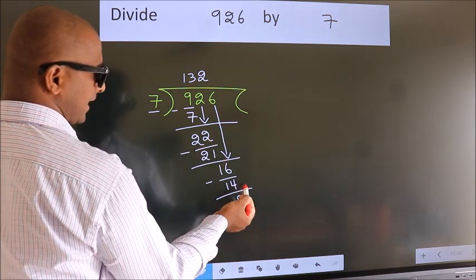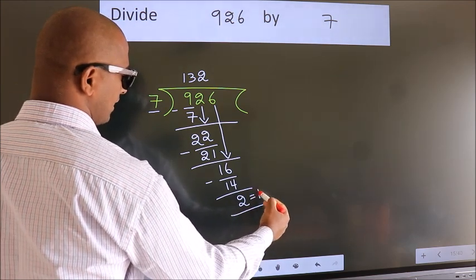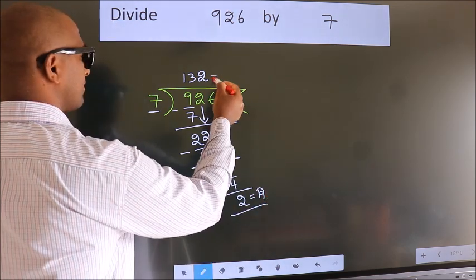No more numbers to bring down. So we stop here. This is our remainder. This is our quotient.